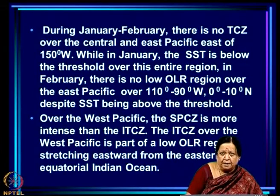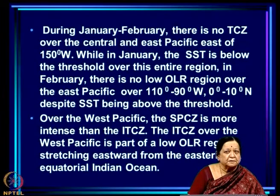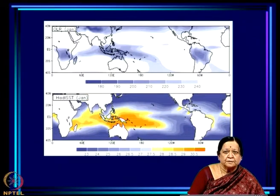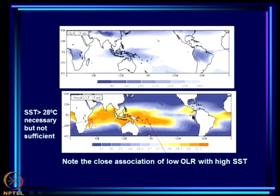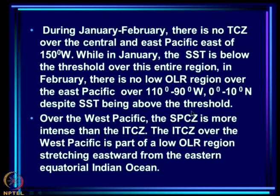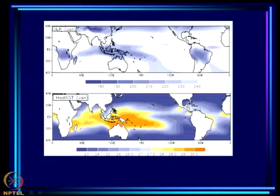During January and February, as we saw in the seasonal pattern, there is no TCZ over the central and east Pacific east of 150°W. In January you see there is no region of low OLR at all over the east Pacific, and the sea surface temperature is below the threshold except for very small patches. By February this patch of warm SST higher than the threshold has increased in extent as well as intensity, but there is still no low OLR region over the east Pacific.